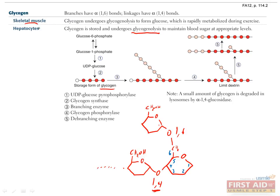In skeletal muscle, glycogen undergoes glycogenolysis to provide glucose, and therefore ATP, to be used during exercise. In the liver, glycogenolysis is not used to increase glucose locally, but to maintain blood glucose, and therefore the energy supply for the whole body.